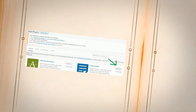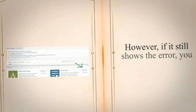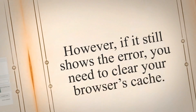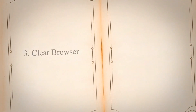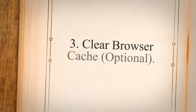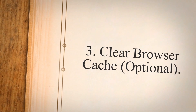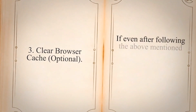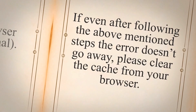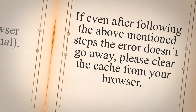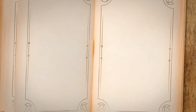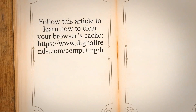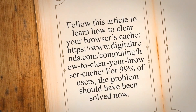That's it. Now the problem in the WordPress editor should have been fixed. However, if it still shows the error, you need to clear your browser's cache. Step 3: Clear browser cache — optional. If even after following the above mentioned steps the error doesn't go away, please clear the cache from your browser.